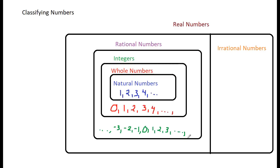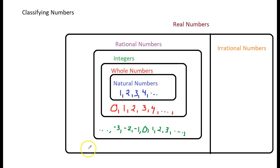Natural numbers is a subset of whole numbers, whole numbers is a subset of integers, and integers is a subset of rational numbers. What are rational numbers? If somebody's rational, you'd say they make sense, and if somebody's irrational, you'd say they don't make sense. That may be true to an extent with numbers — rational numbers means they can be written as a fraction.